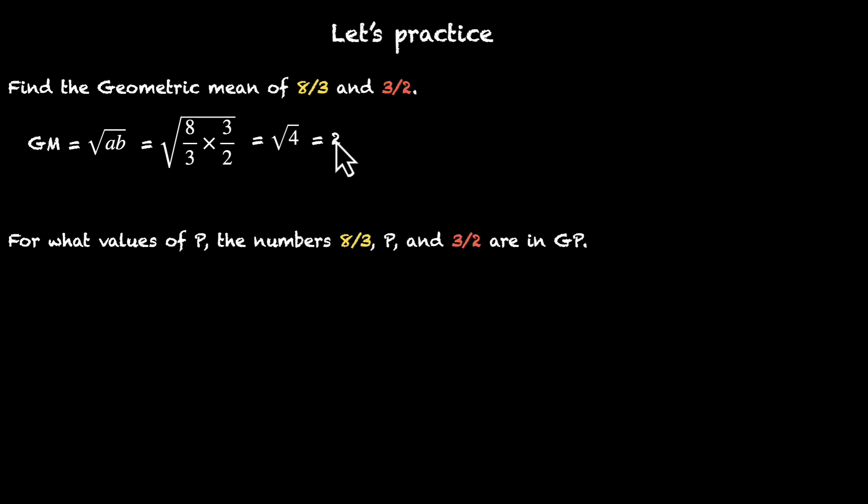So in the first case, we were talking about the geometric mean between these two numbers. And the answer was 2. This means 8/3, 2 and 3/2 will form a GP. And that's what the question is asking. For what values of P, the numbers 8/3, P and 3/2 are in GP. So 2 has to be the answer. You're right, but you're also wrong. 2 is not the only answer. There's one more answer. There are actually two values of P that we can put so that these three numbers form a GP. How can that be? Let's figure it out together.